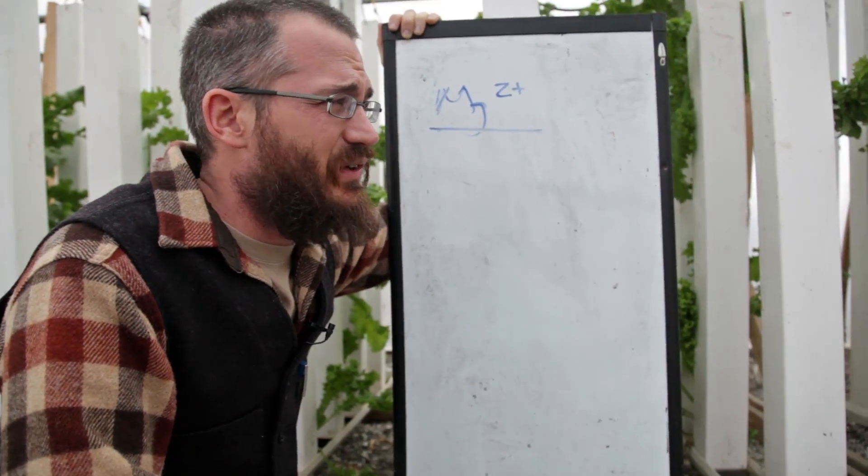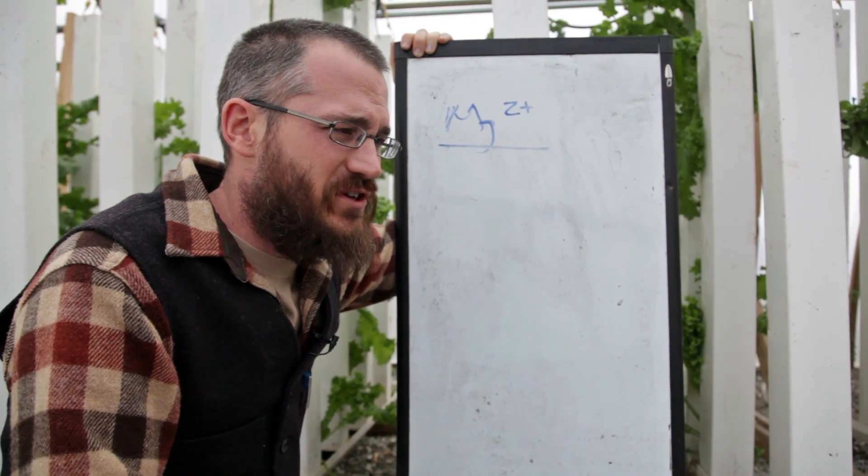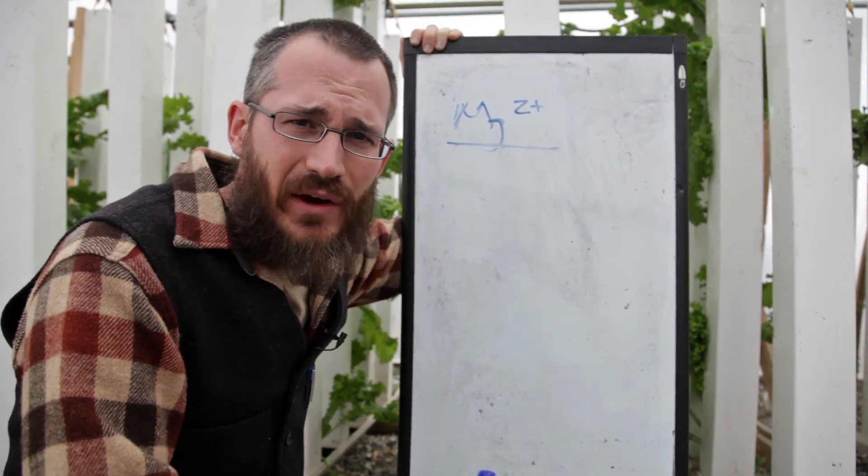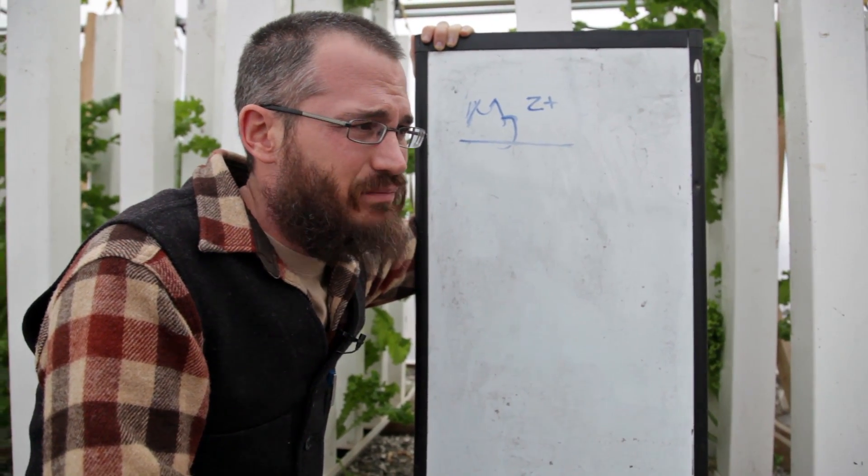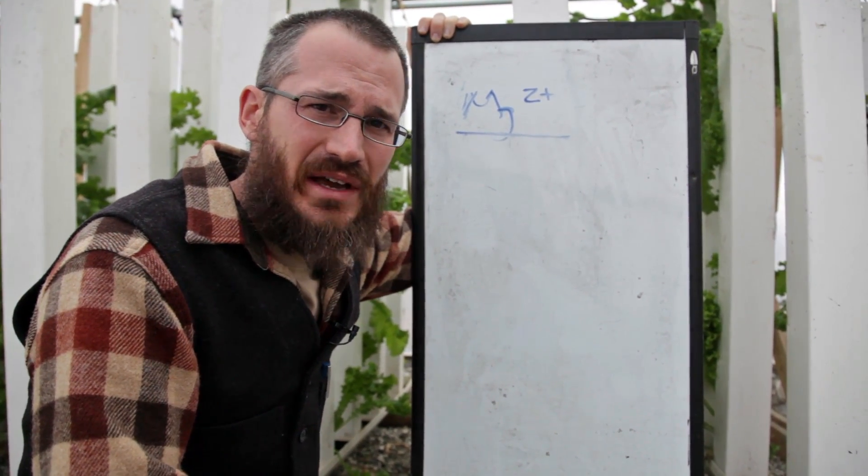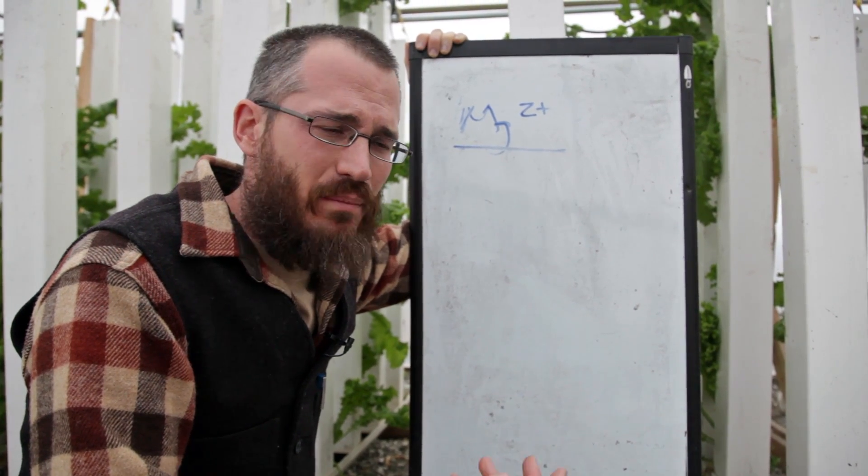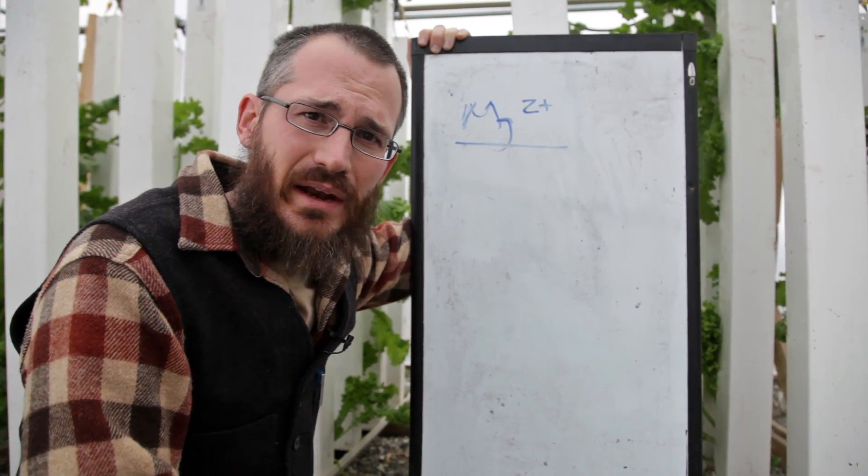So one of the reasons that you see chlorosis as part of the magnesium deficiency is because magnesium is really core. It's integral to photosynthesis. So as the plant begins to lack magnesium, what ends up happening is that the chloroplasts end up breaking down, and the ability of the plant to photosynthesize is really decreased dramatically.